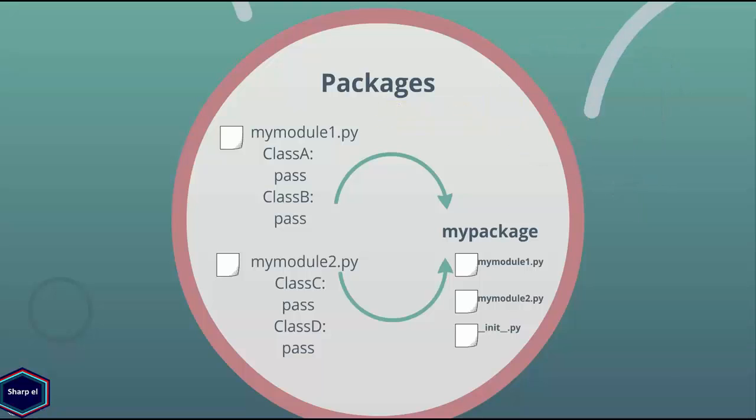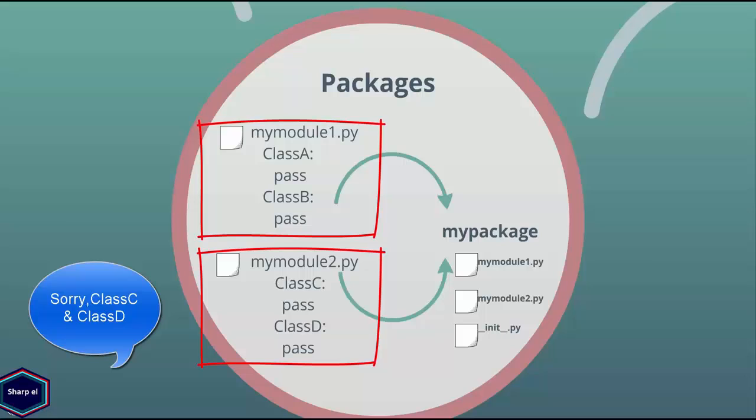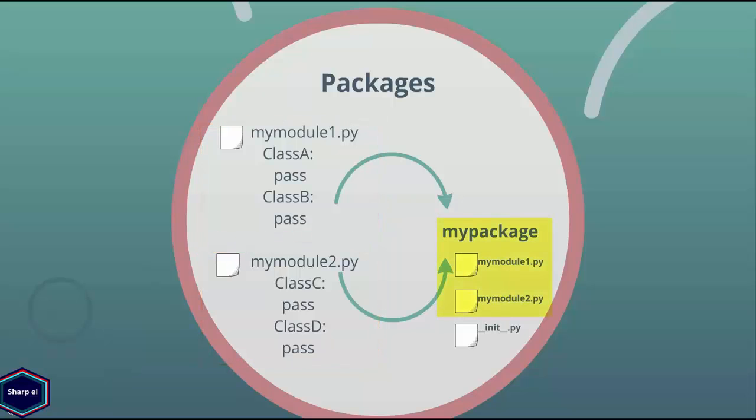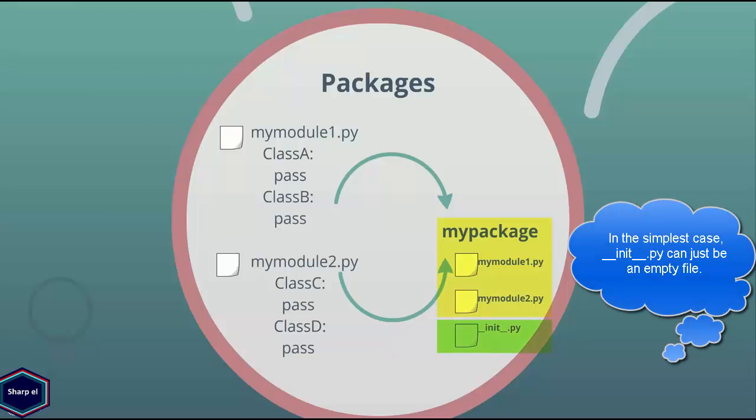In this example I have two different modules. MyModule1 contains two different classes, class A and class B. Similarly, MyModule2 also contains class C and class D. Now to create a package, let's name it MyPackage. I have to copy both MyModule1 and MyModule2 into my package folder. Now I also have to create a new file init.py inside my package. Again, init.py is just an empty file and it is required to create a package. So we have created our first package.